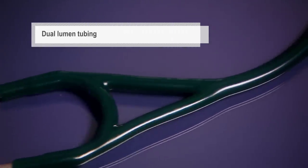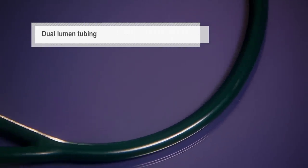The dual lumen tubing is actually two tubes in one, designed to eliminate rubbing noises.